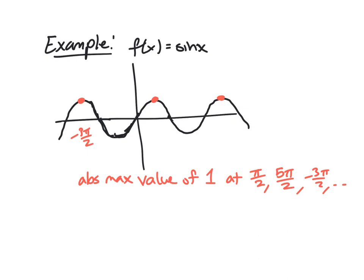And similarly, we see a whole bunch of times where it bottoms out at negative 1. So it would have an absolute minimum value. That's the smallest value that sine attains of negative 1 at negative pi over 2, 3 pi over 2, you know, 7 pi over 2, and so on. So in this case, there's only one max value and one minimum value, but they occur at infinitely many points.